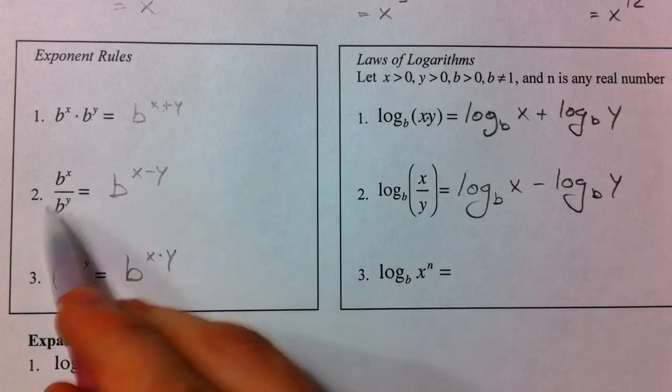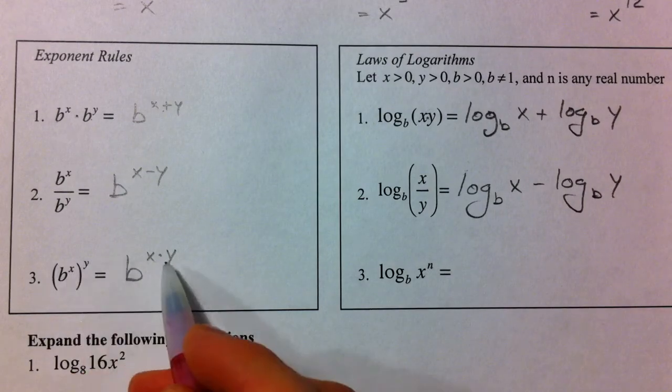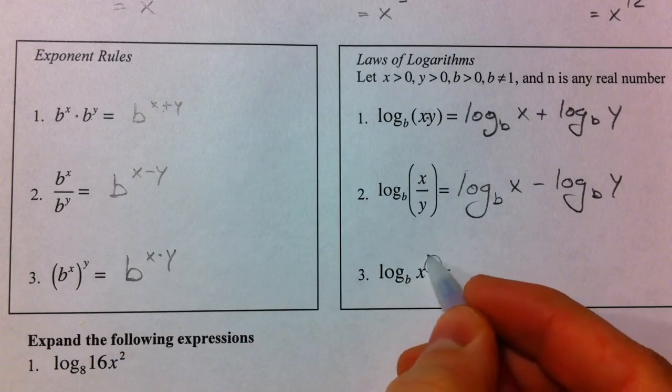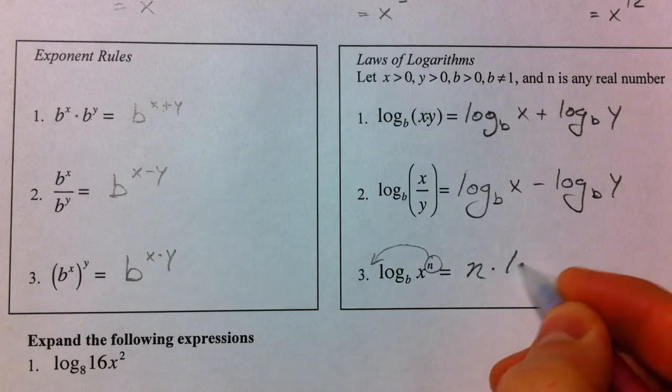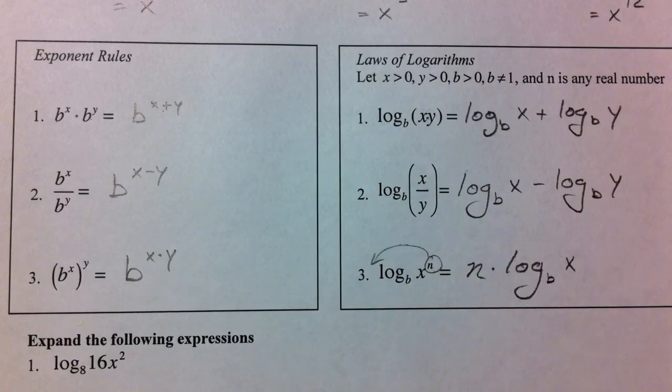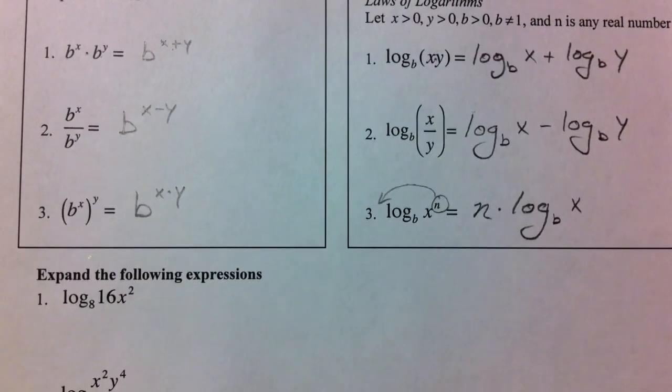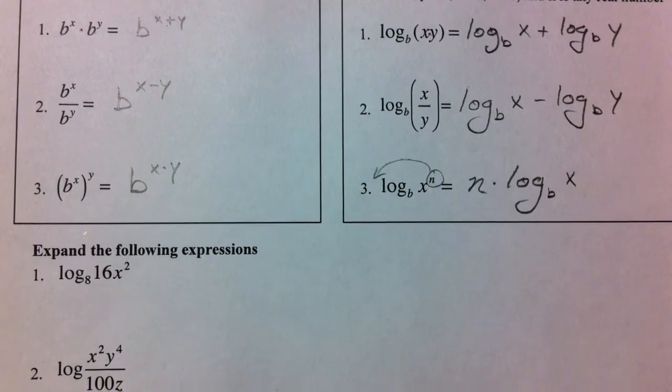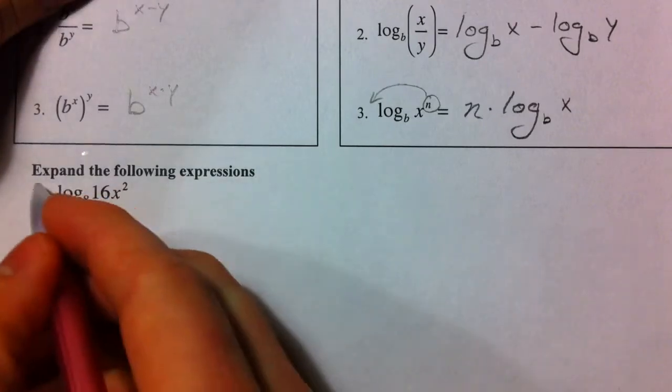And so, in the same sense, what we did over here. If we have a power raised to a power, that's going to change into multiplication. And so, we're going to take this power and bring it down in front. We can write that as n times the log base b of x. And so, the first thing we're going to do is expand some expressions using these properties. Fully expanded is no more multiplication within any log and no more powers within any log.